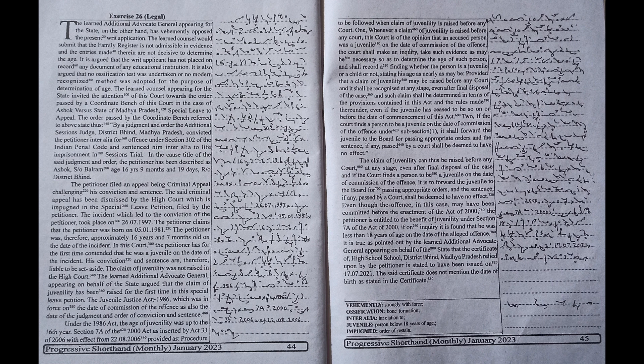In this court, the petitioner has for the first time contended that he was a juvenile on the date of the incident. His conviction and sentence are therefore liable to be set aside. The claim of juvenility was not raised in the high court. The learned additional advocate general appearing on behalf of the state argued that the claim of juvenility has been raised for the first time in this special leave petition.